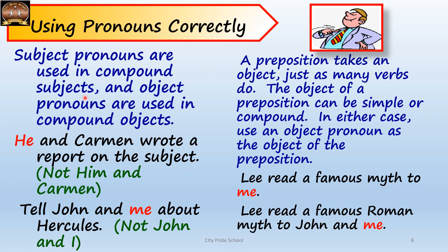Subject pronouns are used in compound subjects and object pronouns in compound objects. The difference between simple and compound is that a simple subject or object is made up of one word, while a compound is made up of more than one. For example, 'He and Karaman wrote a report on the subject' — 'he and Karaman' form a compound subject, so we cannot write 'him' in place of 'he' because 'him' is an object pronoun. Second example: 'Tell John and me about Hercules' — 'John and me' are compound objects, so we cannot replace 'me' with 'I' because 'I' is a subject pronoun.